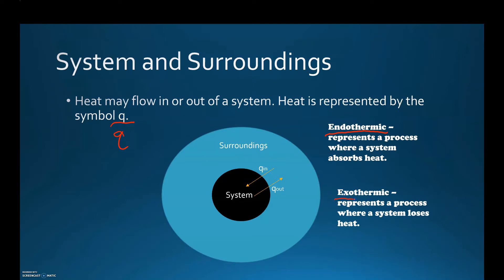Exothermic represents a process where a system loses heat. When we talk about the system, you have the system which is found in the middle here, and you have the surroundings which is on the outside of the system. Heat is either going to travel in or out of the system. If the heat travels out of the system, we're going to consider that to be exothermic. If heat travels into the system, we're going to consider that to be endothermic.